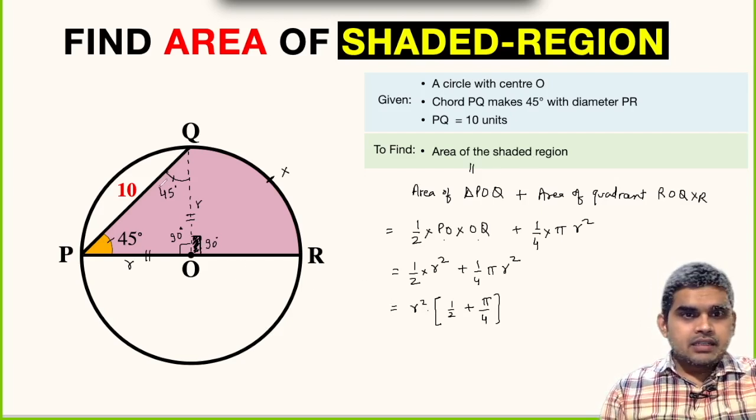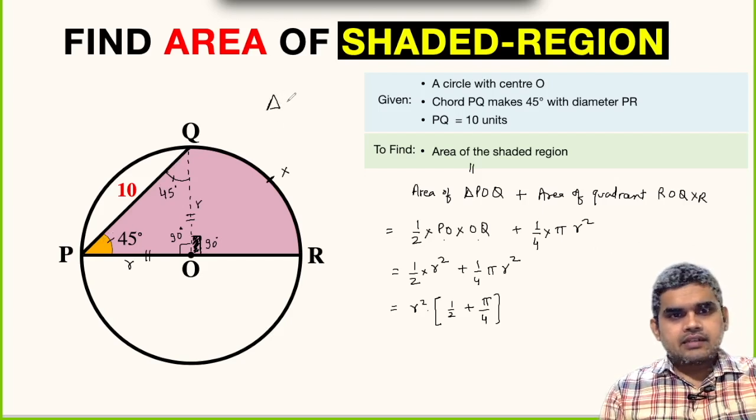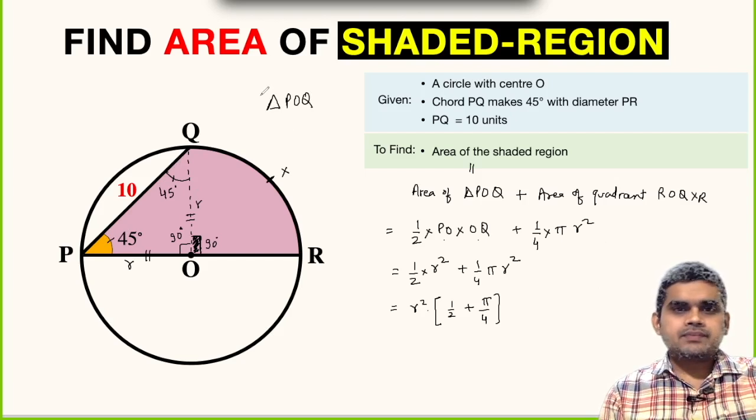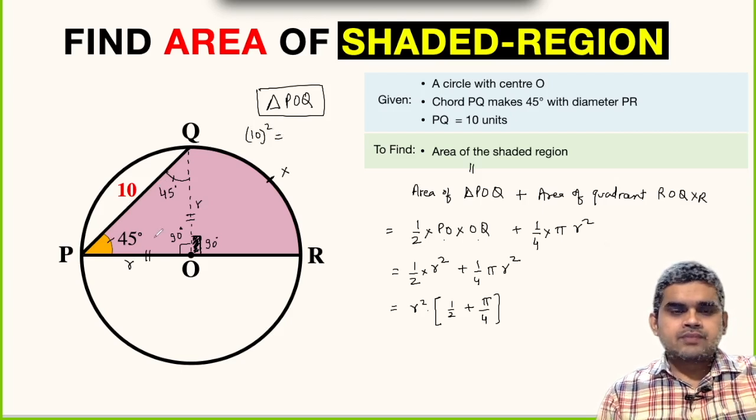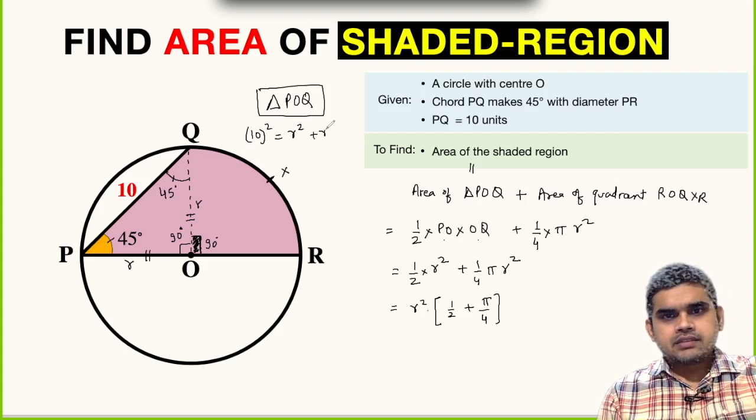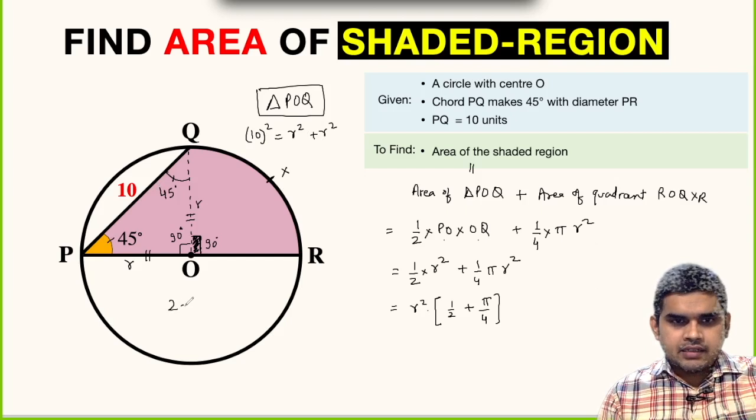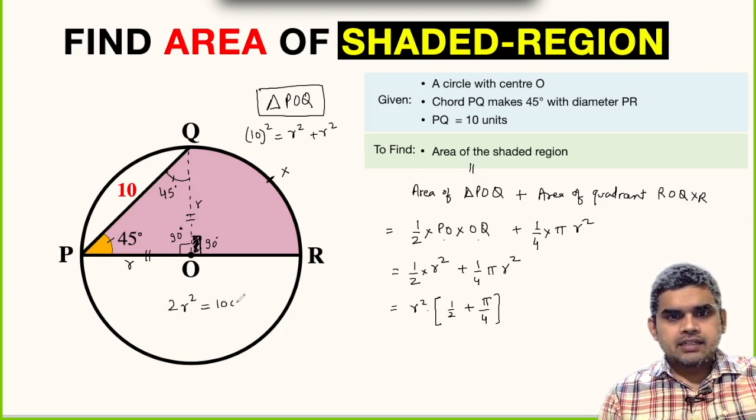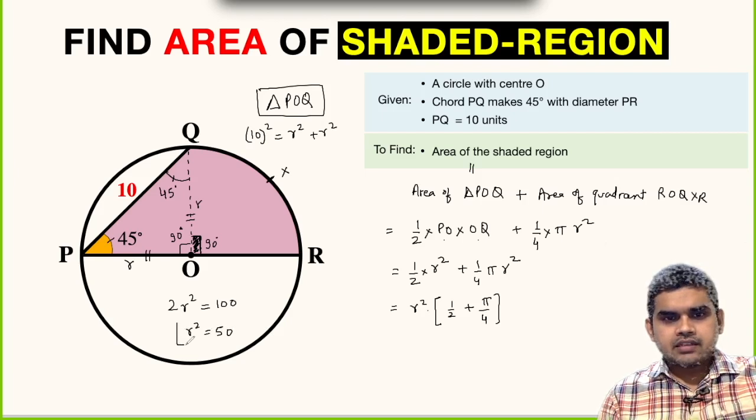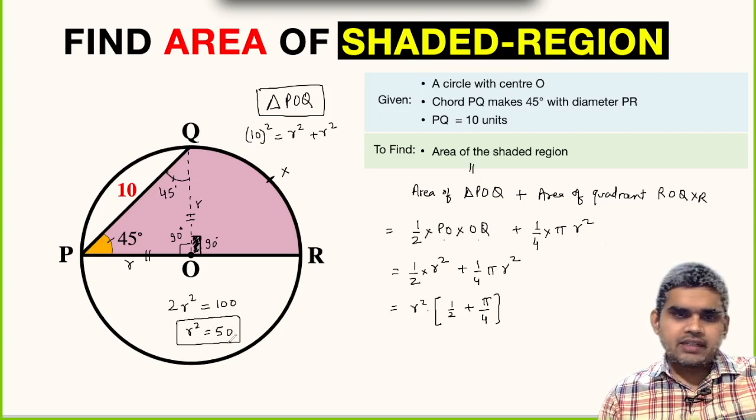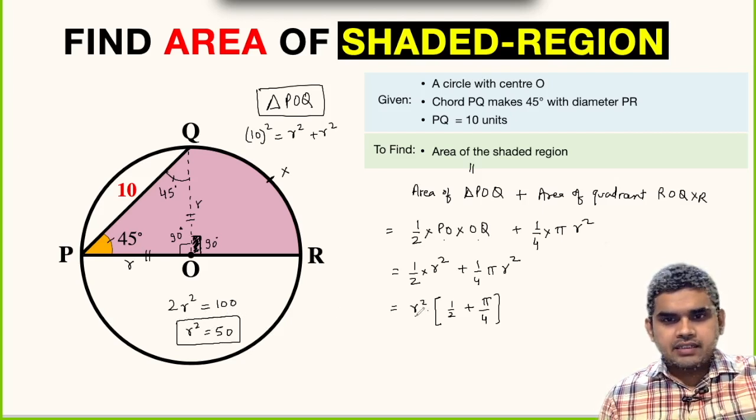If we find out the value of R, we can easily get the total area of the shaded region. Let us focus on triangle POQ. This is a right angle triangle and PQ will be the hypotenuse. By Pythagorean theorem, hypotenuse² equals sum of squares of other sides. So 10² = R² + R², which gives 2R² = 100, so R² = 50.